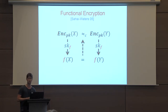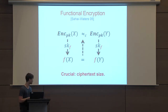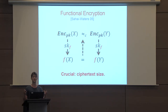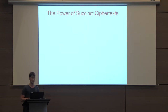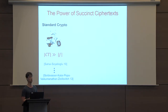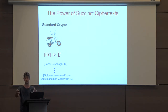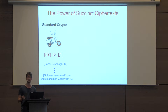A crucial aspect that tremendously affects the power of functional encryption is the size of the ciphertext and how it scales with the circuit size of the functions you want to support. Roughly, if we allow the ciphertext to grow with the circuit size of the functions, then functional encryption is not really more powerful than plain encryption, and in particular we can construct it from standard assumptions.